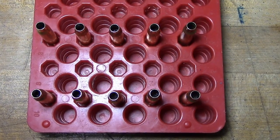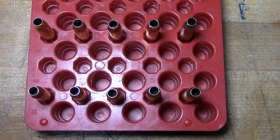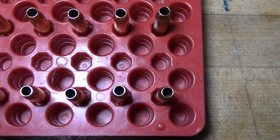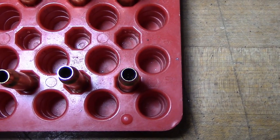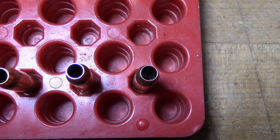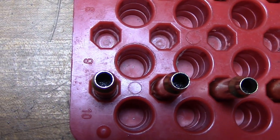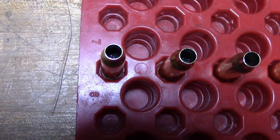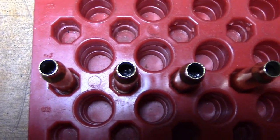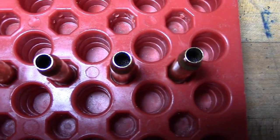Before we start seating our bullets, we want to make sure that there's actually powder in every case, so we're going to visually inspect every one to make sure there's powder inside and that the level looks pretty uniform all the way across. You can use a flashlight, you can use an overhead light, it doesn't matter as long as you can see inside and verify that there's powder in there.